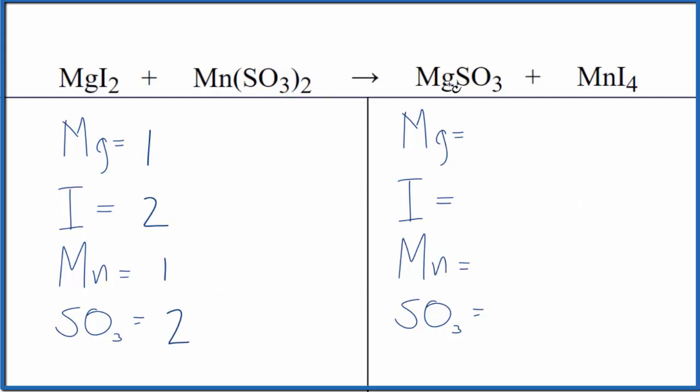Over here in the products, we have one magnesium, four iodine, and one manganese, and then just one sulfite ion. So that makes it a little easier to balance here. You get the same answer either way.